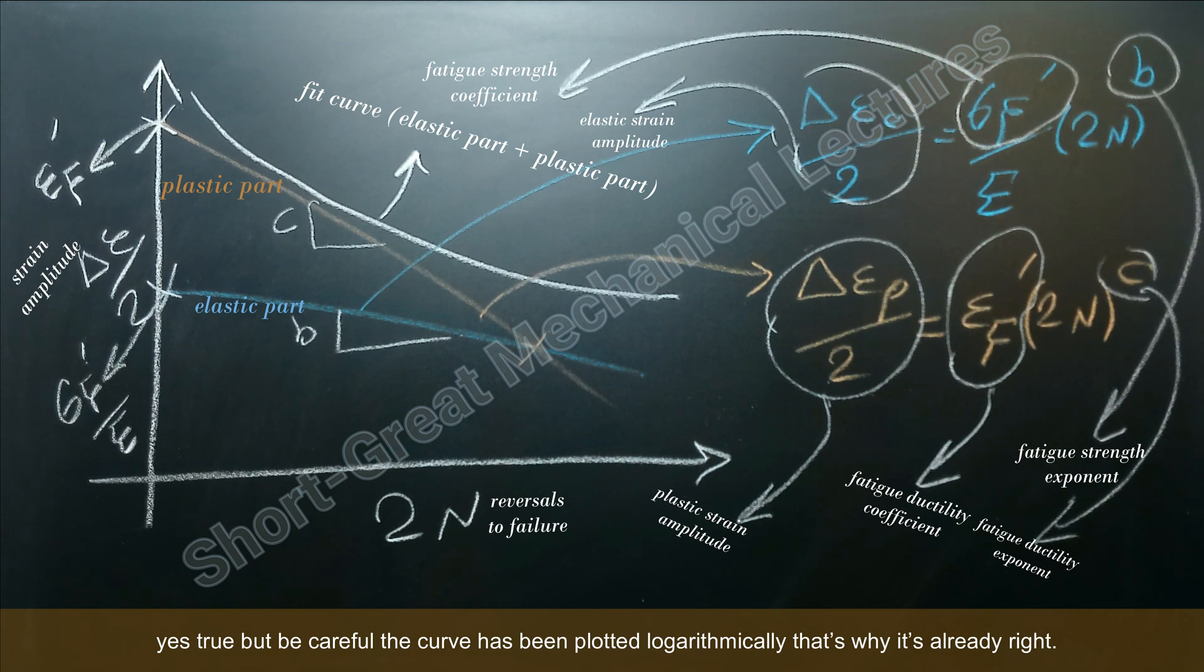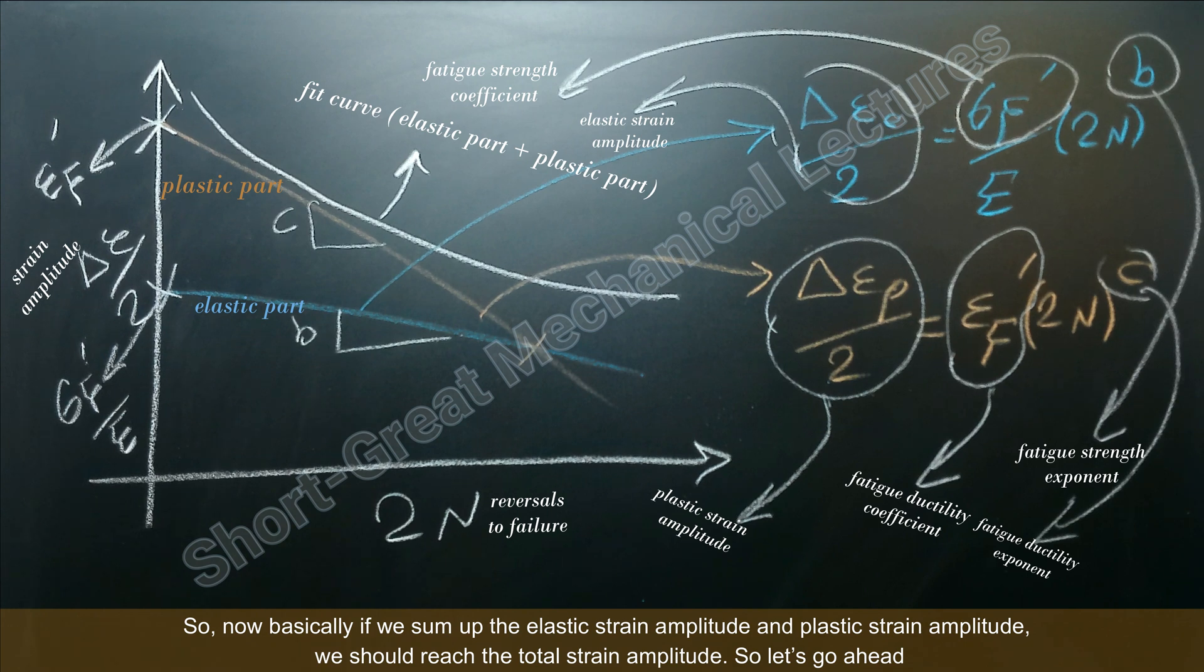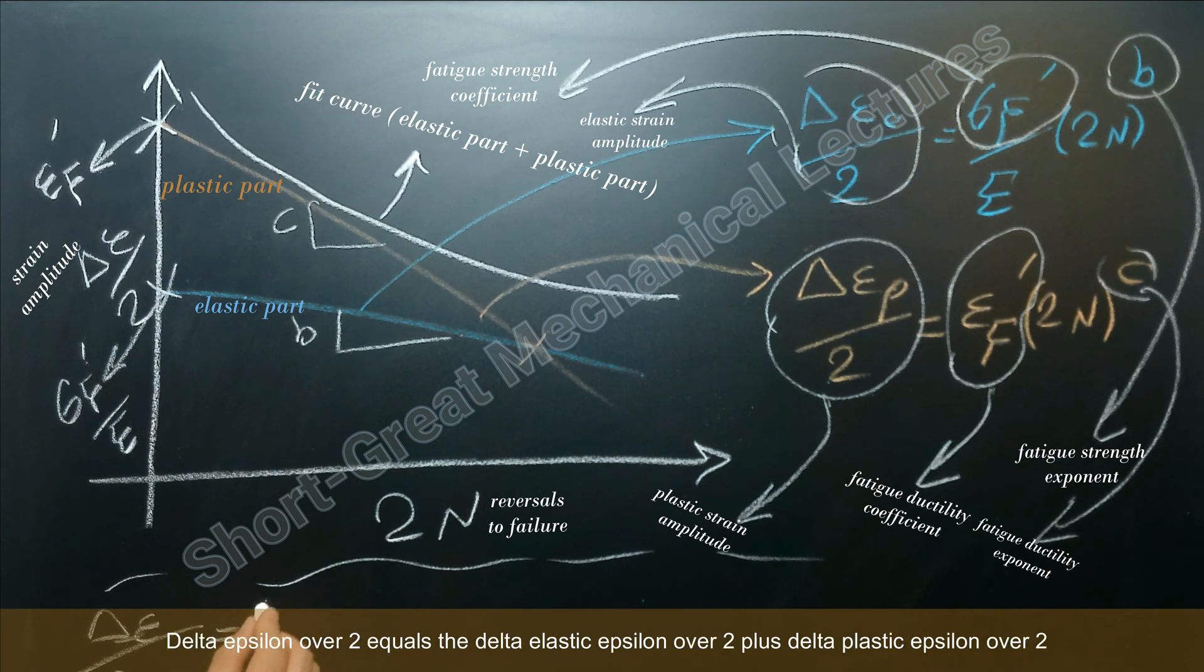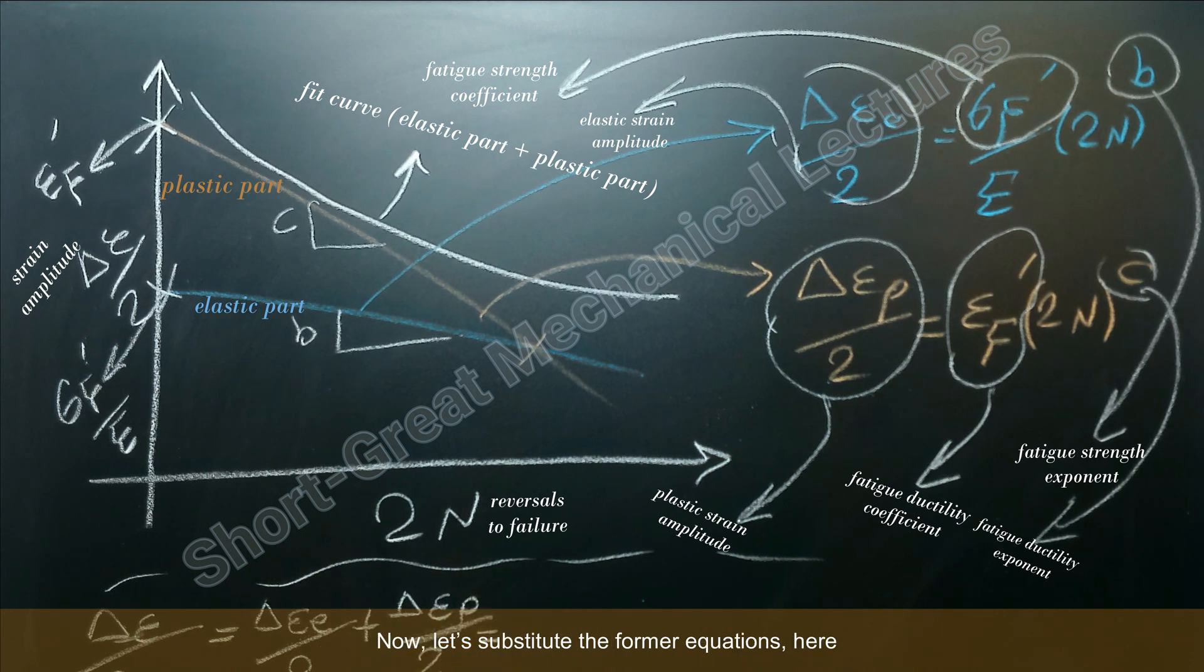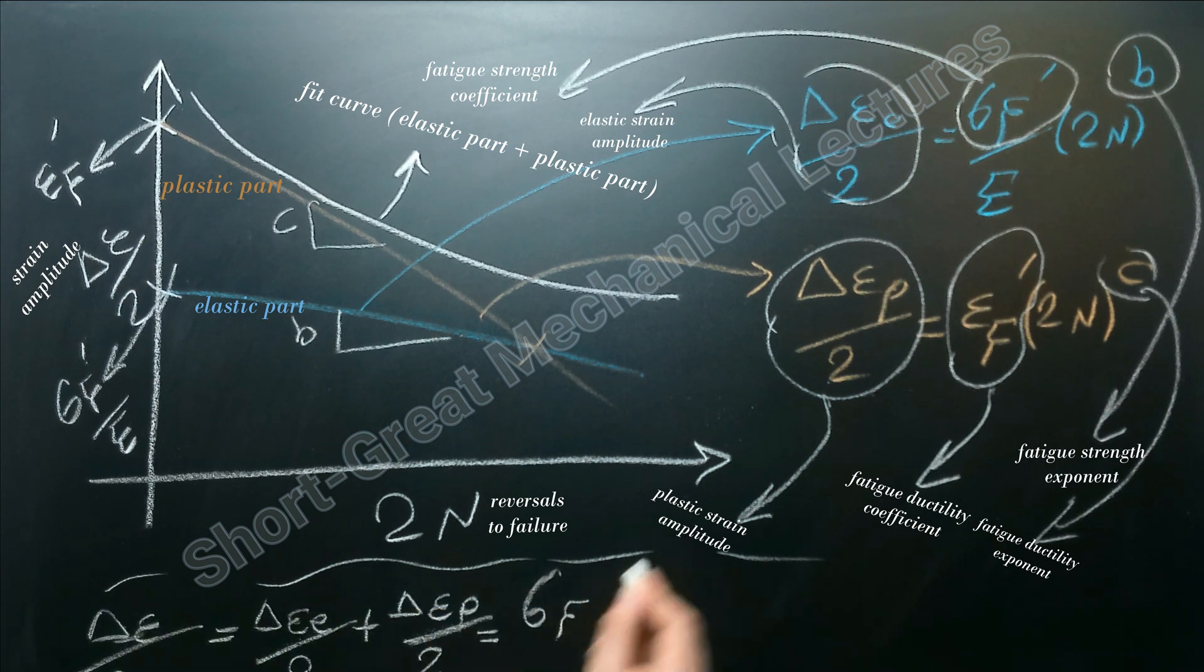So now, basically, if we sum up the elastic strain amplitude and plastic strain amplitude, we should reach the total strain amplitude. Okay, so let's go ahead. Delta epsilon over two equals the delta elastic epsilon over two plus delta plastic epsilon over two. Okay, now let's substitute the former equations here.